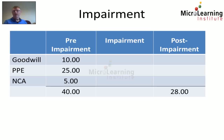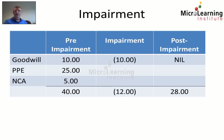We need to impair the carrying amount to 28 million dollars, so we need to allocate 12 million dollars of impairment to individual elements of the cash generating unit. From IAS 36, we first allocate against goodwill — we have 10 million dollars of goodwill, so we write it down from 10 million to zero.